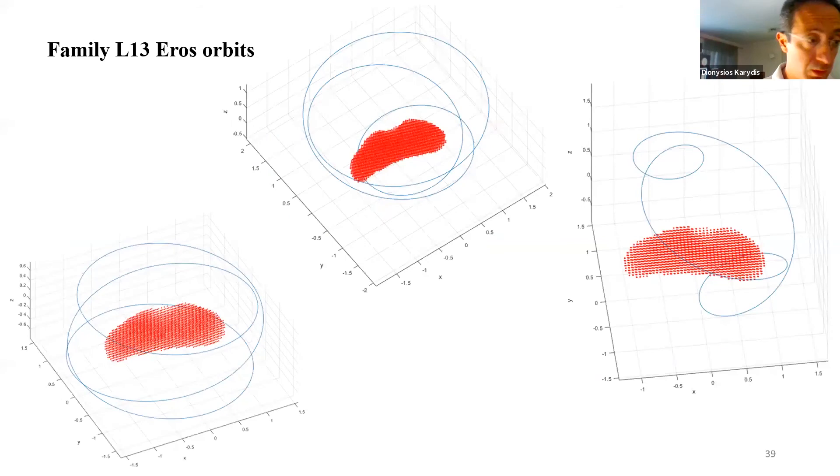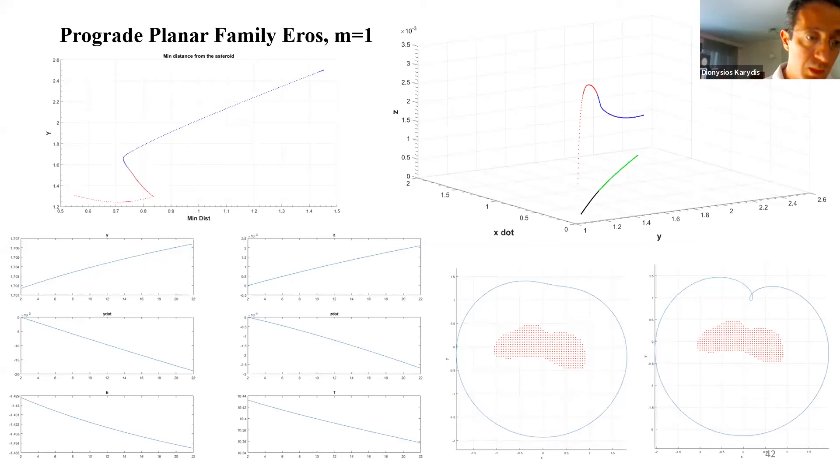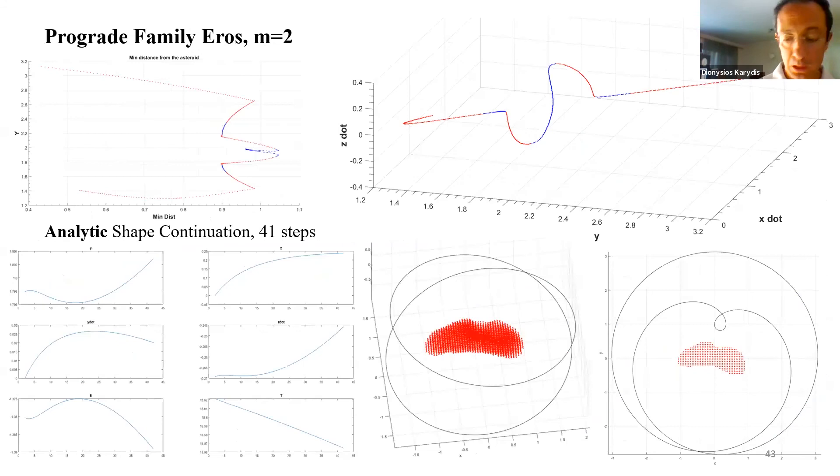And we will continue by giving some examples of some mainly prograde families. Starting with the almost planar circular one. We can see that this family is almost everywhere stable except when approaching the asteroid.